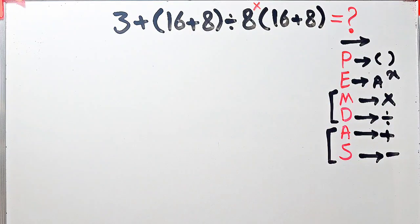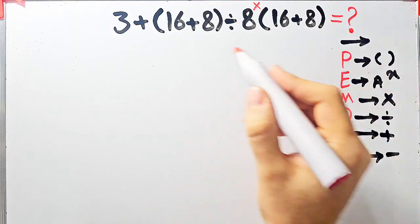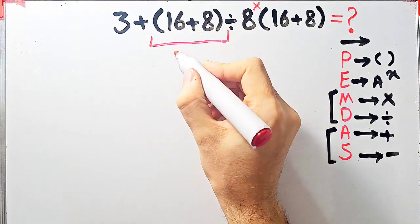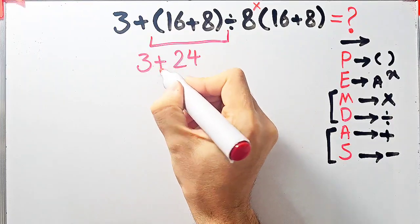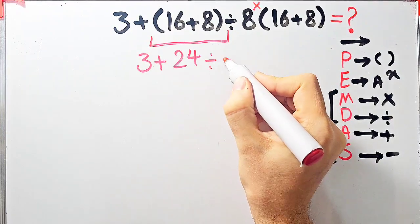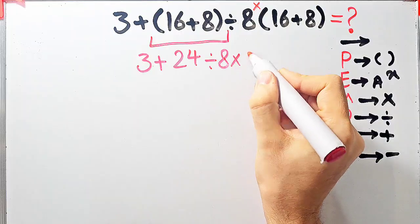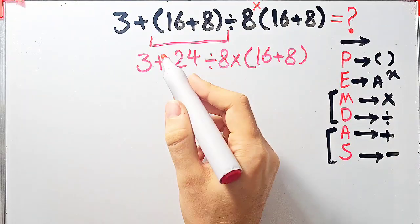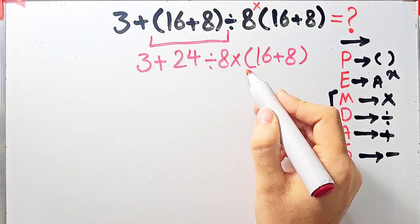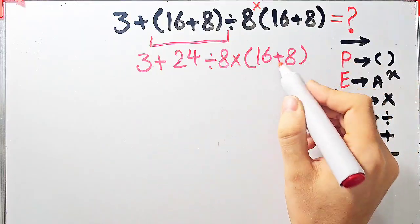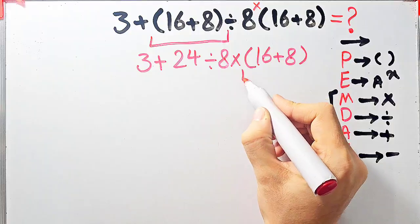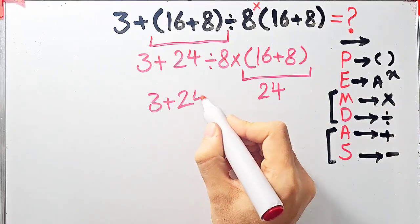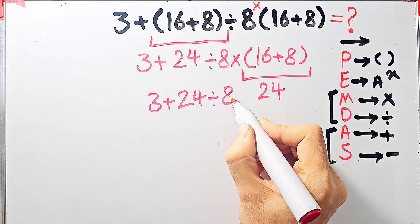Let's solve this question step by step together. According to the PEMDAS rule, first we simplify the parentheses. 16 plus 8 equals 24. Now the question is 3 plus 24, divided by 8, then times open parentheses, 16 plus 8, closed parentheses. We simplify those parentheses again: 16 plus 8 equals 24. Now the question is 3 plus 24, divided by 8, then times 24.